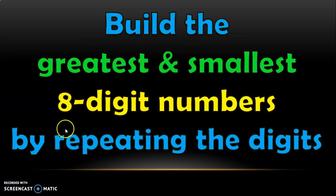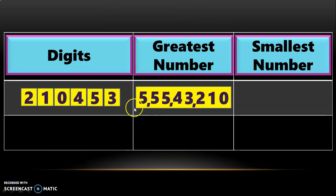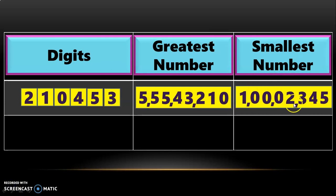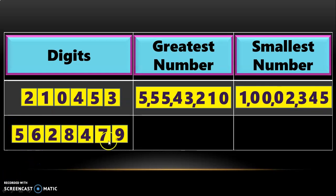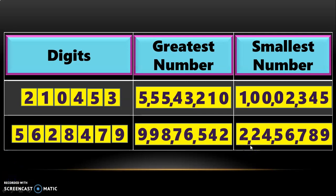Now, building greatest and smallest 8-digit numbers by repeating digits. Given 6 digits, applying the rules, the greatest 8-digit number is 5 crore 55,43,210. The smallest 8-digit number is 1 crore 2,34,500. For the next sum with 7 digits, the greatest 8-digit number is 9 crore 98,76,542, and the smallest 8-digit number is 2 crore 24,56,789.